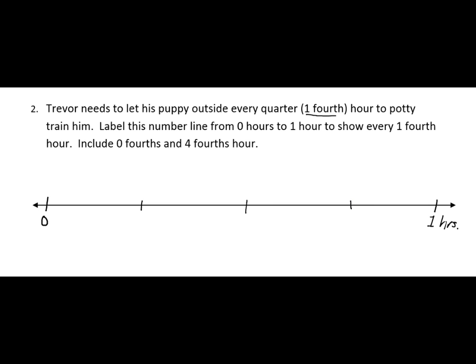So if I go back to my zero, I would have zero fourths. This first section would represent one fourth. After I have two sections, that would be two fourths. Add another section to that would give me three fourths.